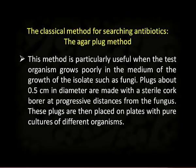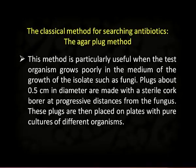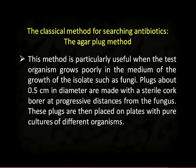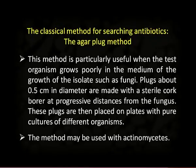There is a classical method for searching antibiotics called the agar plug method. It is particularly useful when the test organisms grow poorly in the growth medium of the isolates, such as fungi. Plugs about 0.5 centimeter in diameter are made with a sterile cork borer at progressive distances from the fungus. These plugs are then placed on plates with pure cultures of different organisms. This method may be used with actinomycetes for searching new antibiotics.